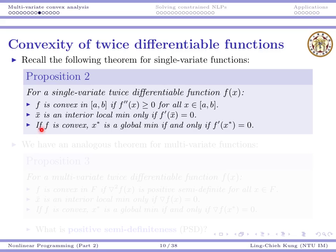This is a necessary condition. But if f is convex, then x-star is a global minimum if and only if the first-order derivative is zero at that point. These are some things we already know.